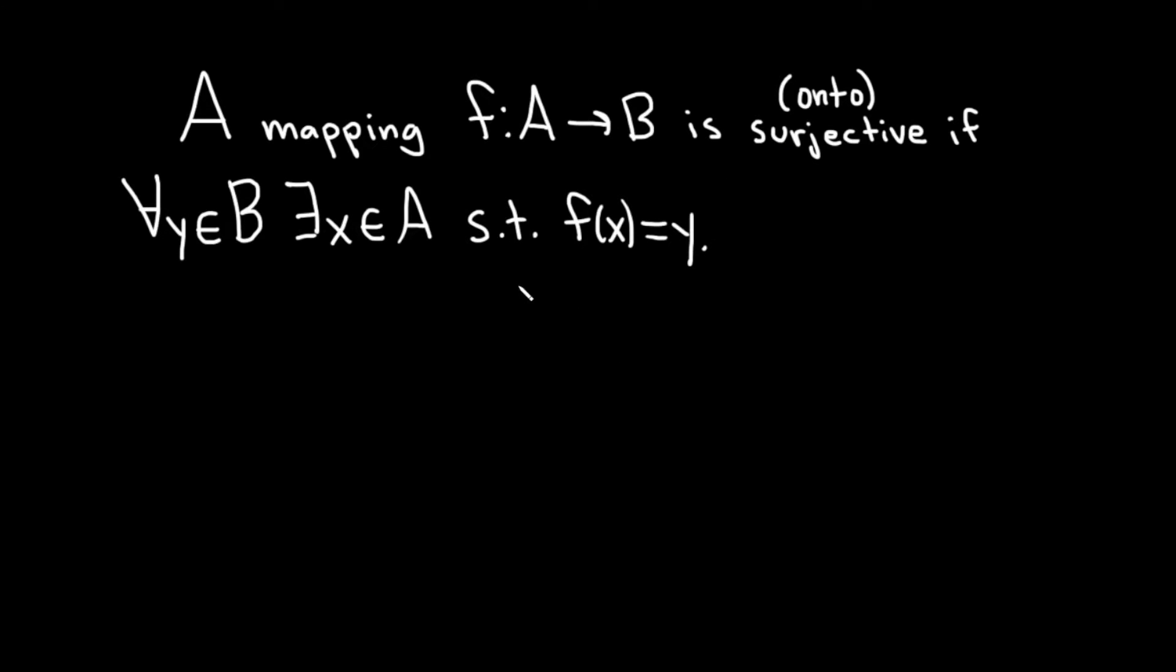And let me just briefly explain what this means intuitively just so you see it. So if this is A, so this is called the domain, and this is B, this is called the codomain, we have a function which takes elements from A and sends them to B, and that function is called f. It's also called a mapping.